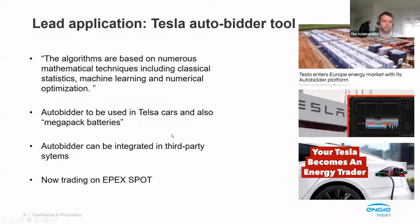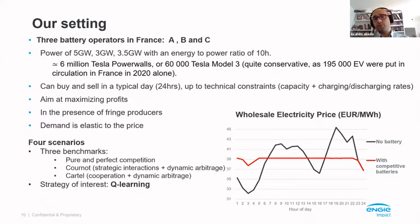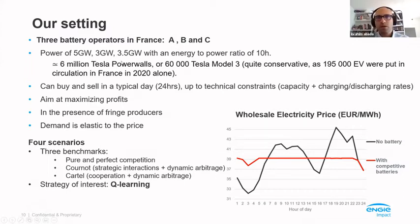There is a conjunction — at least for Tesla — between having a license to trade electricity on the market, having a huge storage capacity, and deploying algorithms to optimally operate that storage capacity. This is our setting. We're going to look at France for the example, and we consider that we have three 'Teslas' — three battery operators endowed with a certain capacity. We assume the setting is asymmetric for more realism, but all these operators have the same energy-to-power ratio, which we took to be 10 hours.